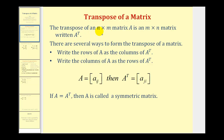The transpose of an n by m matrix A is an m by n matrix, written using this notation here, where we have A with a superscript of capital T, and we say the transpose of matrix A. Notice how if the dimensions of matrix A are n by m, the transpose matrix will have the dimensions m by n. One way to form the transpose is to write the rows of matrix A as the columns of the transposed matrix, or we can write the columns of matrix A as the rows of the transpose.